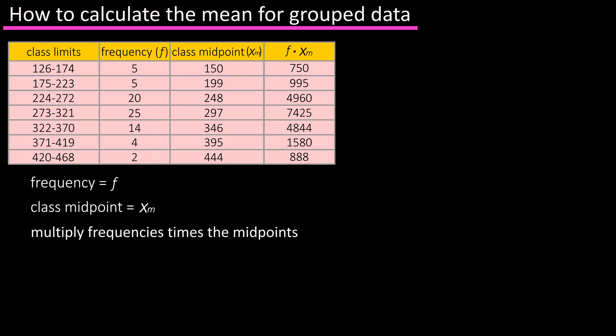Next we're going to find the sum of the last column, the frequency times the midpoint column, and adding these up we get 21,442, and we also want to find the sum of the frequencies, which is 75.